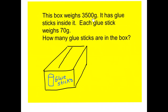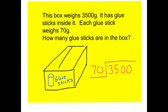This box weighs 3500 grams and has glue sticks inside; each glue stick weighs 70 grams — how many glue sticks are in the box? Using a division sum: 3500 divided by 70. By removing a zero from both numbers the sum becomes much easier: 7 into 35. 7 into 35 goes five times, and 7 into 0 is 0 — so there are 50 glue sticks inside the box.